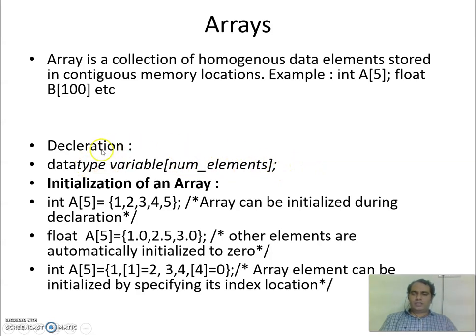This becomes your declaration of array variable. Initialization of array can be done directly: int A[5] = {1, 2, 3, 4, 5} within the curly braces, separated by commas, and then at the end delimiter semicolon. Array can be initialized during declaration also.